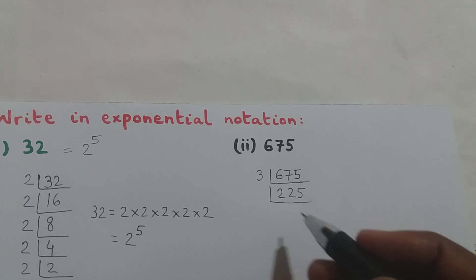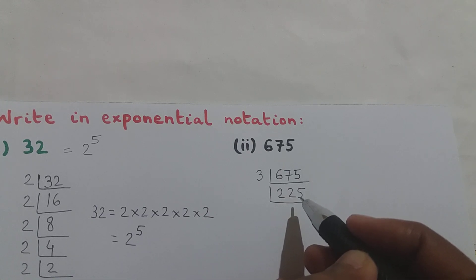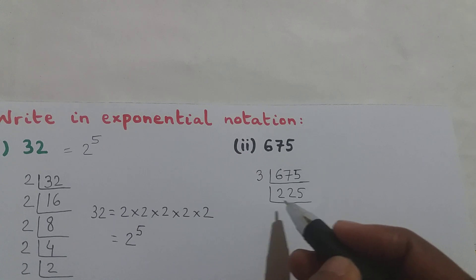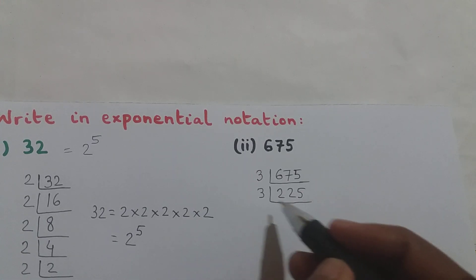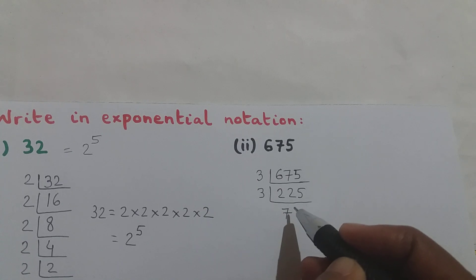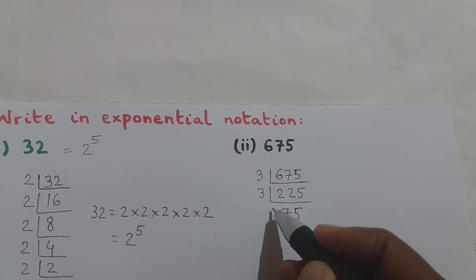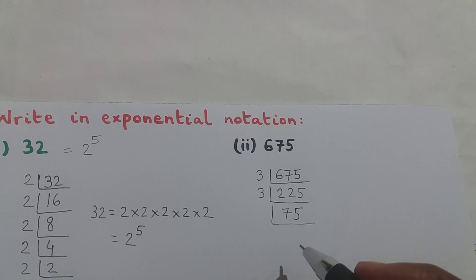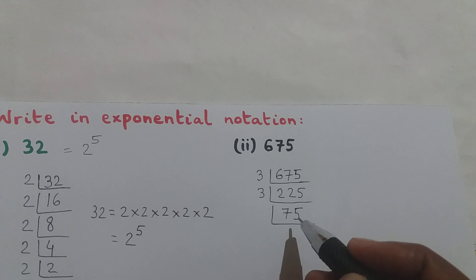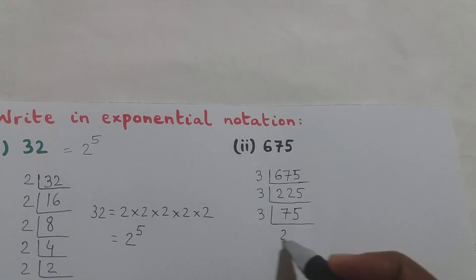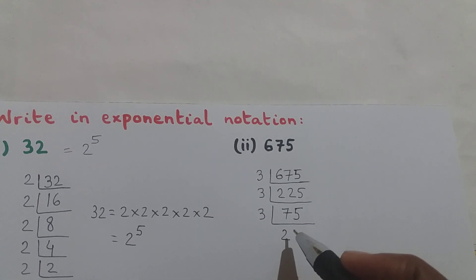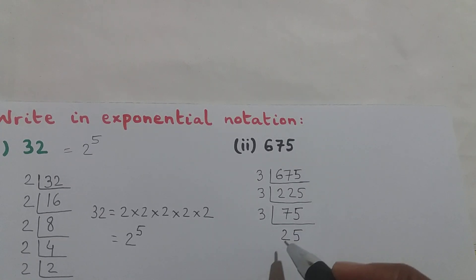Now let us check whether 225 is divisible by 3: 2 + 2 = 4, and 4 + 5 = 9, and 9 is divisible by 3. So 225 divided by 3 is 75. Now is 75 divisible by 3? 7 + 5 = 12, and 12 is divisible by 3. So 75 divided by 3 is 25.